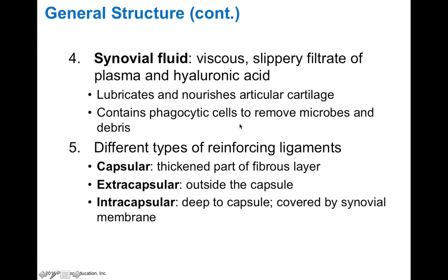We also find phagocytic cells that can remove microbes and debris, keeping the fluid clean as a lubricant. There are also different types of reinforcing ligaments: capsular ligaments, which are part of the fibrous layer of the articular capsule; extracapsular ligaments, found outside the articular capsule, supporting the joint from the outside; and intracapsular ligaments, found within the joint itself. An example of an intracapsular ligament is the anterior cruciate ligament of your knee, found within the joint cavity, surrounded by synovial fluid and covered with synovial membrane.